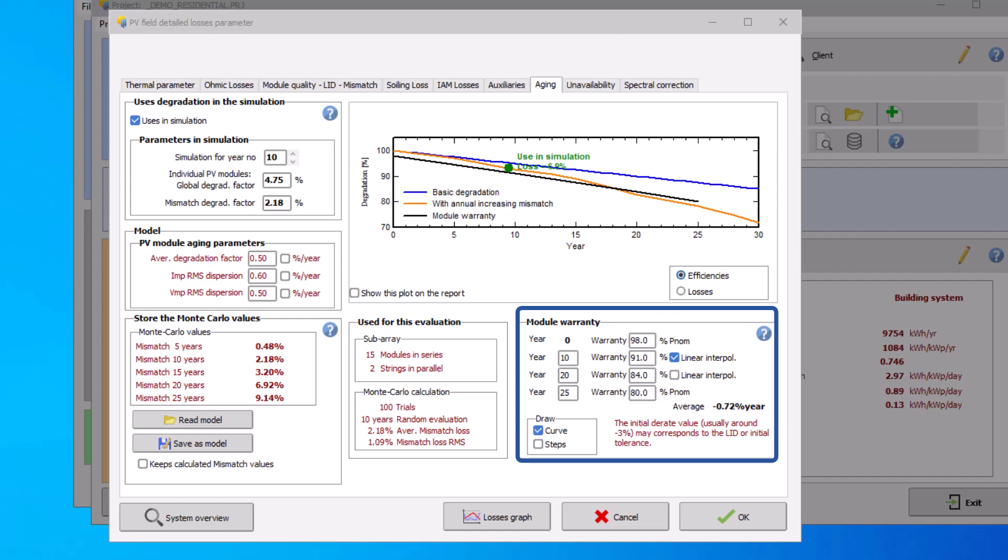PVSYST pre-fills the fields with fixed default values, and you should verify that these correspond to the PV modules you will be using. This value should be understood as the worst case degradation for an individual PV module, and should not be confused with the degradation rate of the PV system.